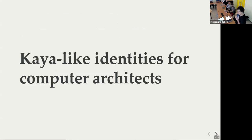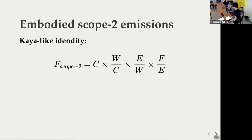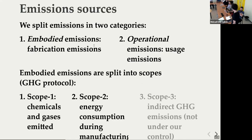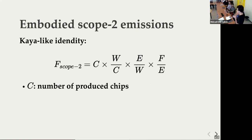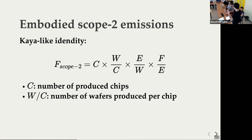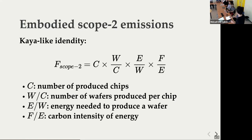What are the three Kaya-like identities for computer architects? There are three: one for operational emissions, and one per scope for amortized emissions. The one we see here is for amortized scope two — energy consumption during manufacturing. It's the same principle: F equals F, and you add the factors you want to think about. Those factors are: the number of chips produced, how many chips per year; the number of wafers used to produce those chips (a wafer is a slice of silicon on which you place chips); the energy needed to produce a wafer in the fab; and the carbon intensity of energy used during manufacturing.